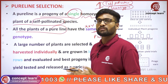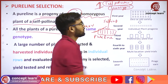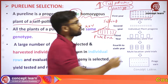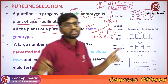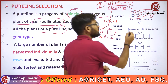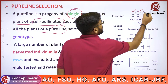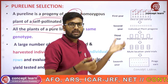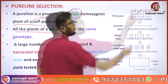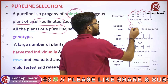What is the specialty of pure line selection compared to mass selection? In mass selection, from a variable population, we select plants phenotypically. We select individual plants, and the seeds of selected plants are mixed together. For example, we select plants and the seed is mixed in a row.